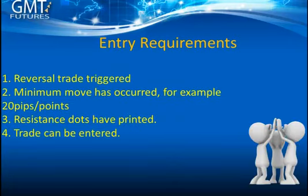All right Traders, so what we're going to look at now are the entry requirements. The first thing we need to see is that the reversal trade is triggered — we can't take a pyramiding setup unless we've had a reversal trade that's triggered, so we're short in a reversal. The other requirement is that a minimum move has occurred: you want to see at least a minimum of 20 pips or more, not just a 5 or 10 pip move. The third criteria is that resistance dots have printed. Once those conditions are met, we can enter the trade, and I'm going to take you through how that works visually so you'll see exactly how we get in and how we take our profit.